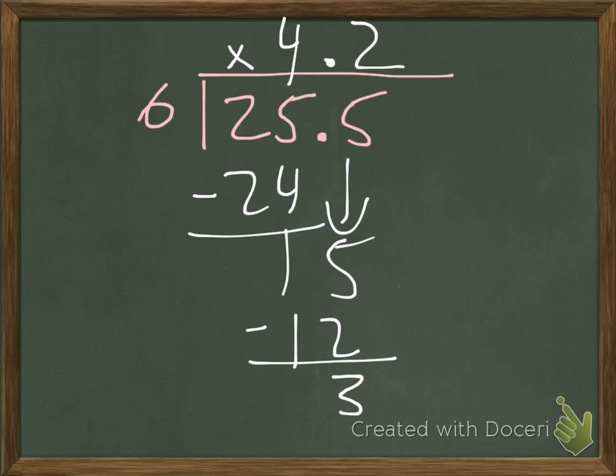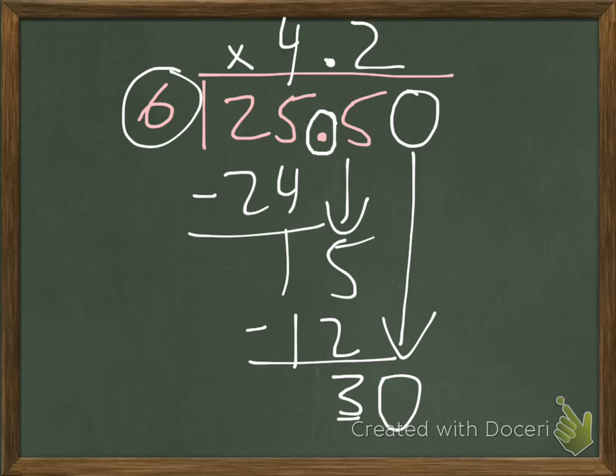Now, since we are distributing the trail mix into 6 bags, we don't want a remainder. There's 3 ounces that are left over. We want to create that as a decimal. Therefore, we'll add a 0 and we'll bring down that 0. The reason we're not adding a decimal here is because there's already a decimal in the dividend.